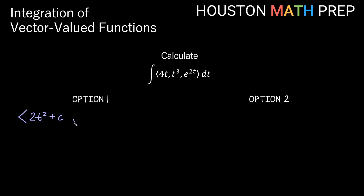Let's move on to the next one. If we were integrating t cubed, power would go up by 1, divide by the new power, we'd get 1 fourth t to the fourth, but we'd also have plus c here. So I need to differentiate between the two of these because they're probably not even the same constant. They might be, but they're probably not. So let's call this c1, we'll call this c2.